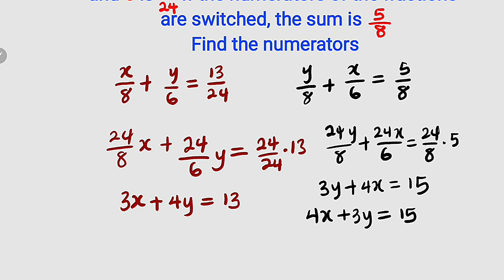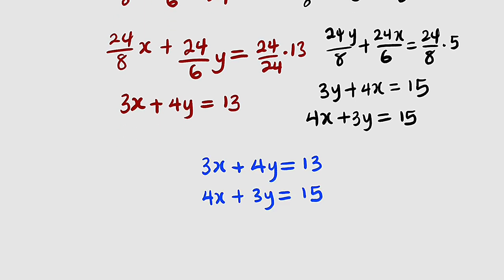Let us eliminate x. To eliminate x, we can multiply this equation by 3, and multiply equation 1 by 4. Because if you multiply equation 1 by 4, we have 4 times 3x is 12x, and 3 times 4x is 12x. Therefore, we can eliminate x.